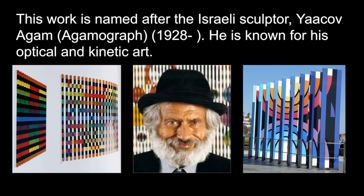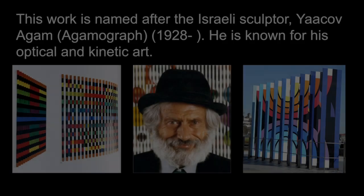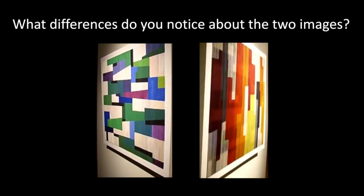He was born in 1928 and is most famous for his optical and kinetic art. When you look at the different viewpoints of this artwork, what differences do you notice between each image?